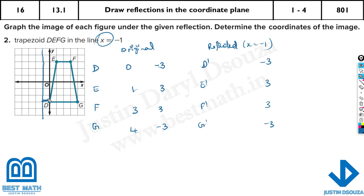The x values change. How much is the distance from D to the line? It's 1. So you need to subtract: the line is at minus 1, minus 1 more gives minus 2. So D prime x is minus 2. For another point the distance is 2, so it'll be minus 1 minus 2 equals minus 3.